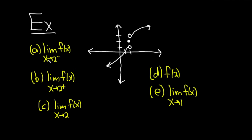Part a wants us to find the limit as x approaches 2 from the left of f of x. Here's 2 on the graph, and we're approaching it from the left. As you get infinitely close to 2 from the left, the y value is getting infinitely close to 1. So the answer is 1.